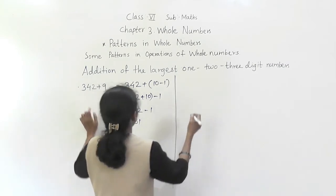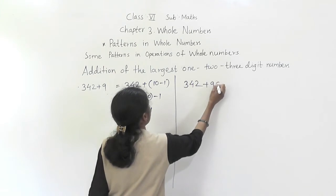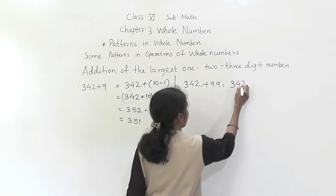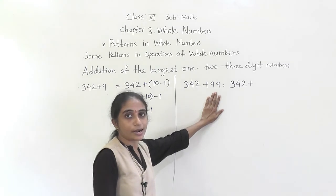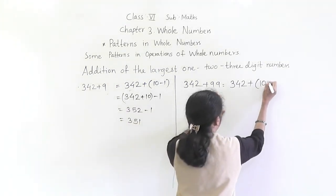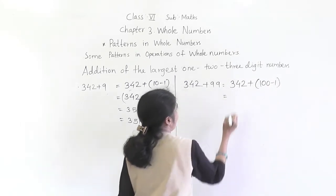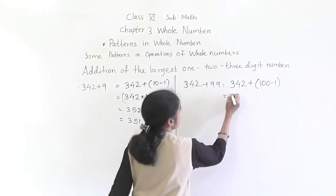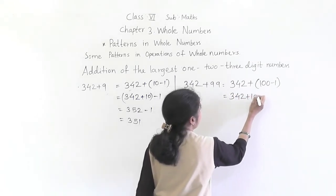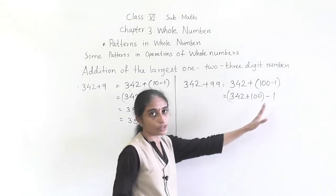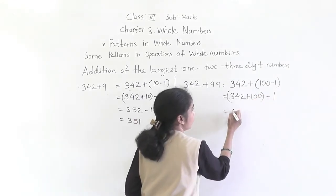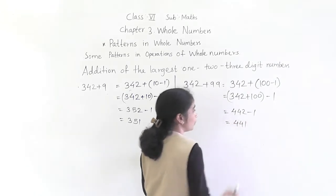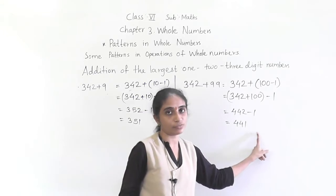Now 342 plus 99: since 99 = 100 − 1, we write 342 + (100 − 1). First do 342 + 100 = 442, then subtract 1 to get 441. So 342 + 99 = 441.